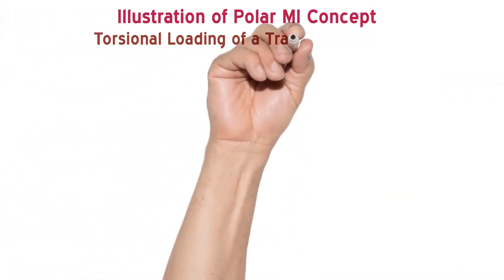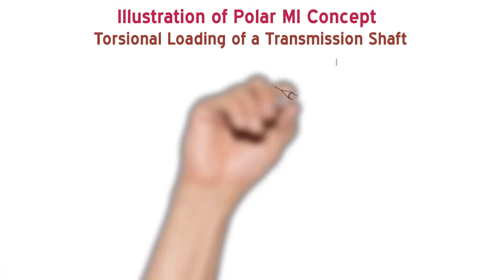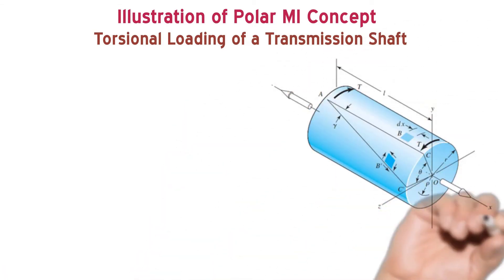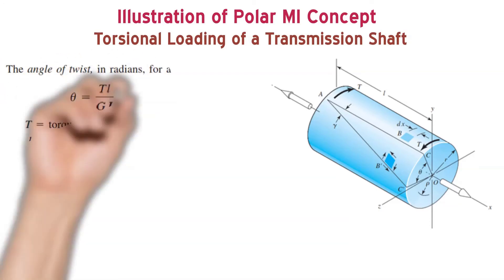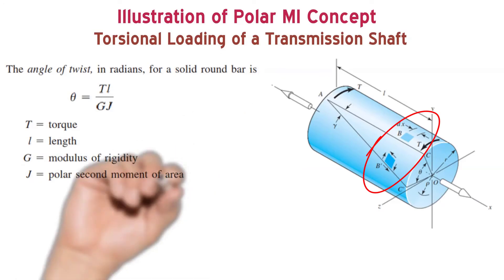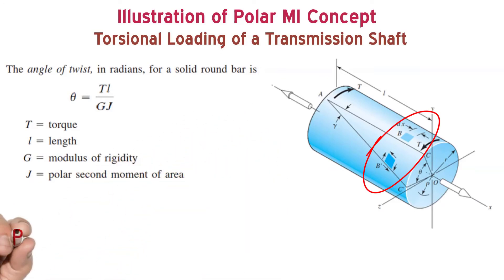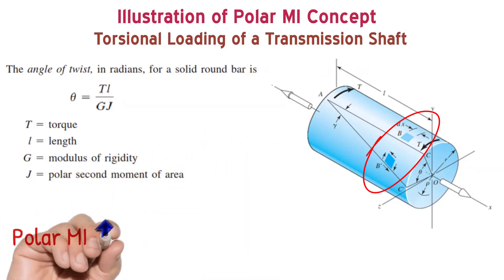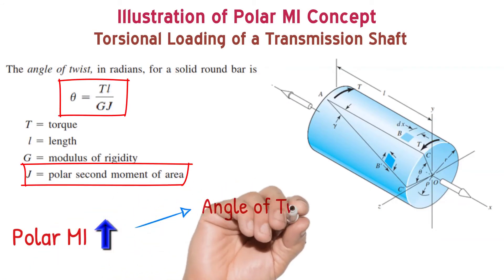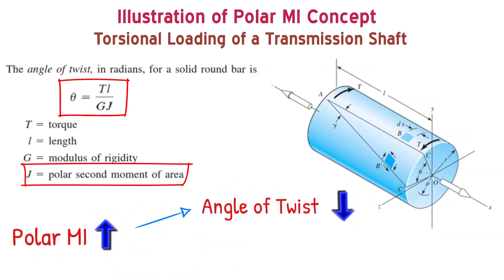Now, instead of the rubber eraser, let us take a shaft which transmits power. When power is transmitted, there will be external torque acting on it. When the external torque is acting on your shaft, it will undergo twisting, as you could see section B, which undergoes angle of twist from B to B prime. That angle of twist is dependent on polar moment of inertia.